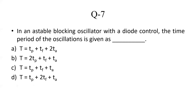The next question is also based on an astable blocking oscillator with diode control. The time period of oscillation of an astable blocking oscillator with diode control, where symbols have their usual meanings, is T = tp + tf + ta. So Option C is correct.